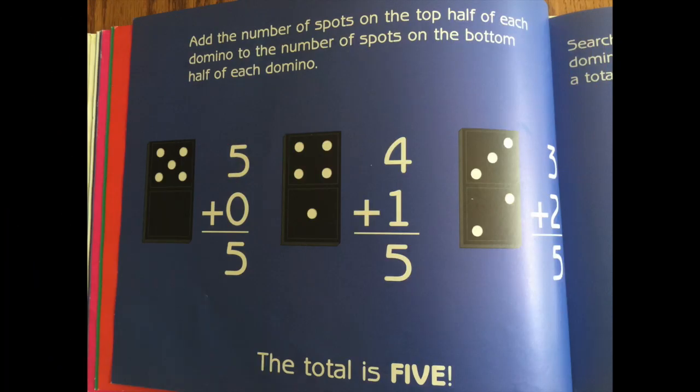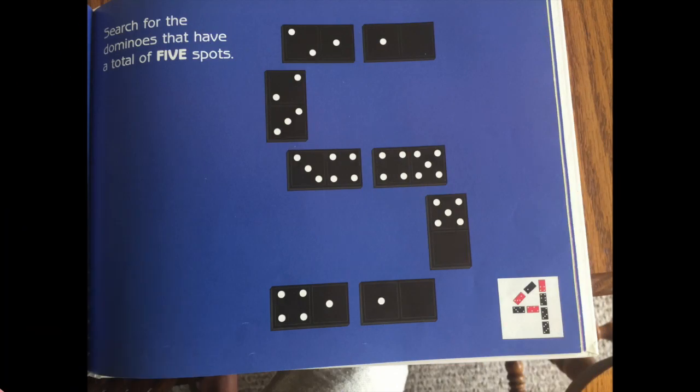Add the number of spots on the top half of each domino to the number of spots on the bottom half of each domino. Five plus zero equals five. Four plus one, five. Three plus two equals five. The total is five. Search for the dominoes that have a total of five spots.